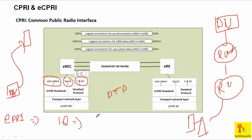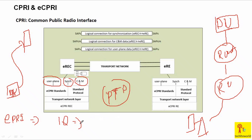The eCPRI interface is capable of sending three kinds of data: user plane data, synchronization data, and control and management plane data. User plane data means your real IQ data. Synchronization data means some PTP packet or SyncE packet - that is synchronization plane data. Control and management plane data means if you want some configuration at the RH site, we use management plane with NETCONF sessions using YANG models.